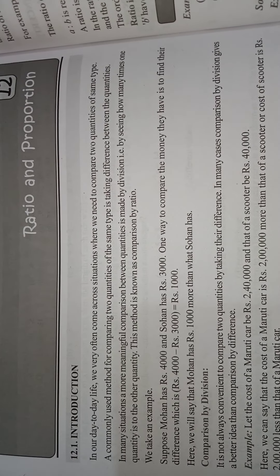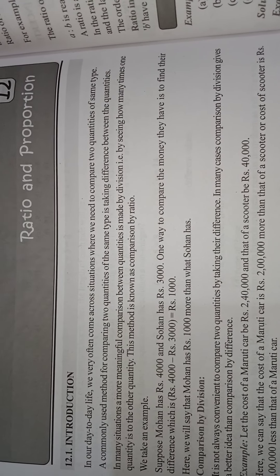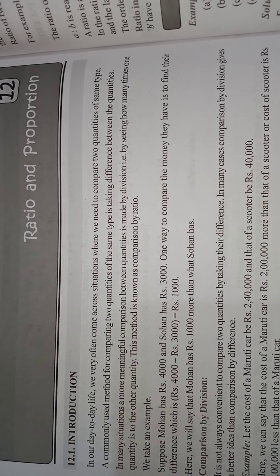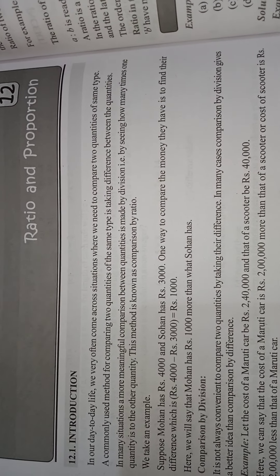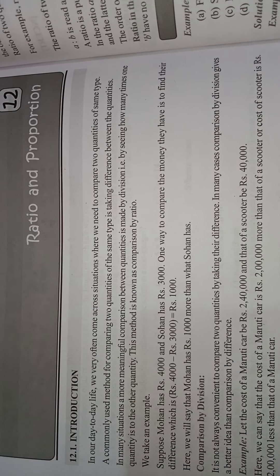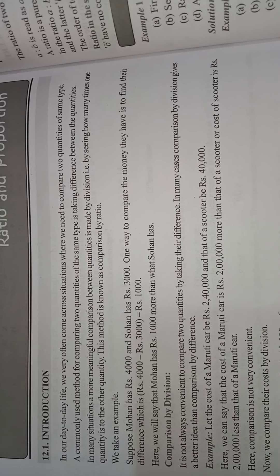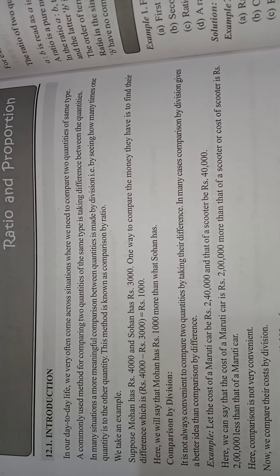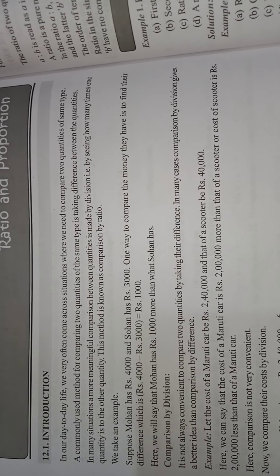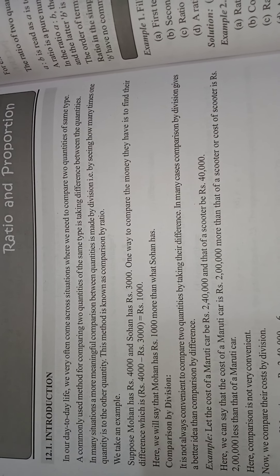In our day-to-day life we very often come across situations where we need to compare two quantities of the same type. A commonly used method for comparing two quantities of the same type is taking the difference between the quantities. In many situations, a more meaningful comparison between quantities is made by division — that is, by seeing how many times one quantity is to the other. This method is known as comparison by ratio.